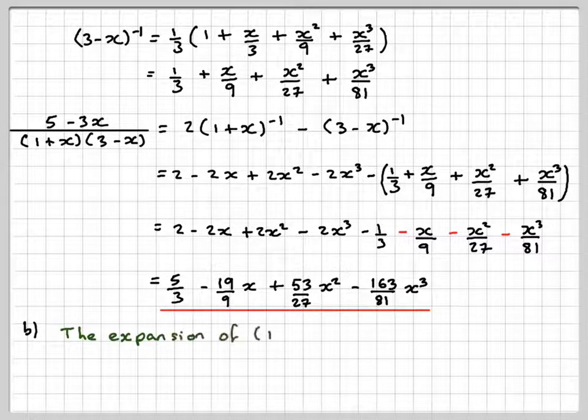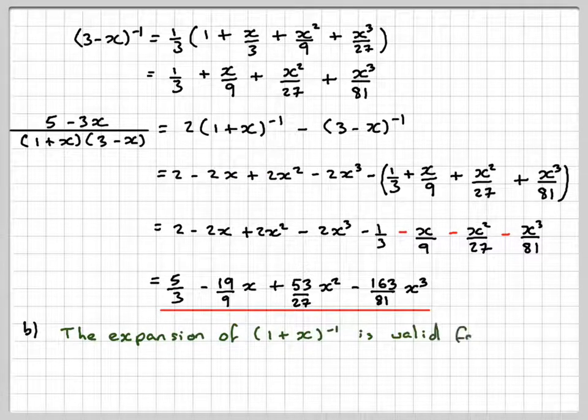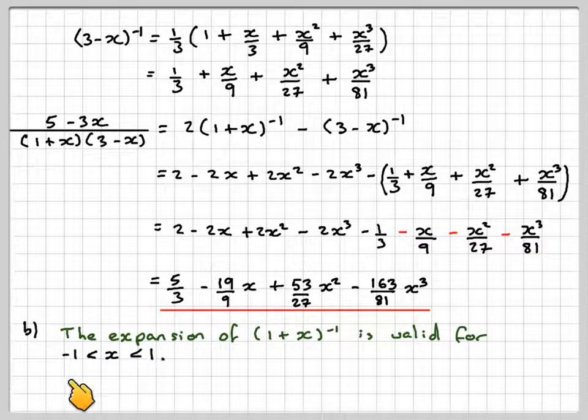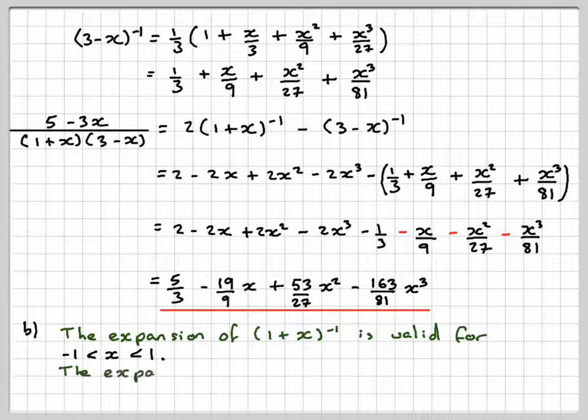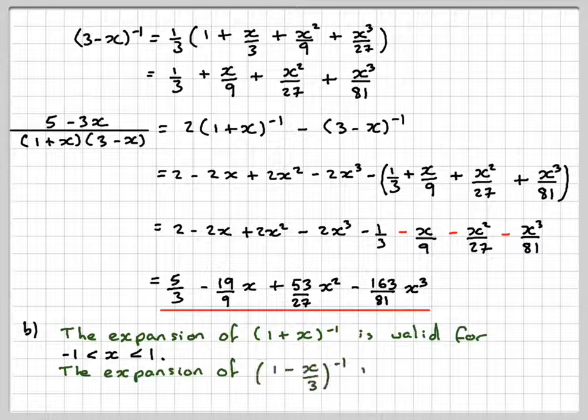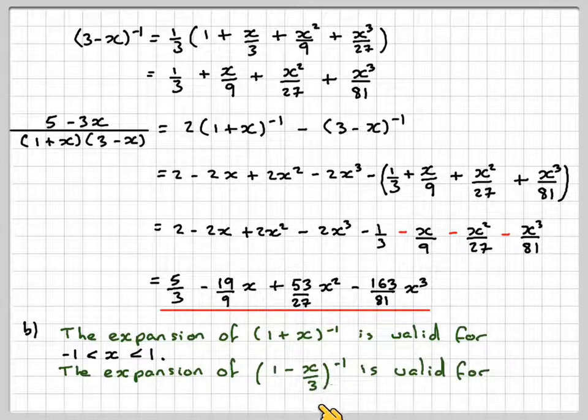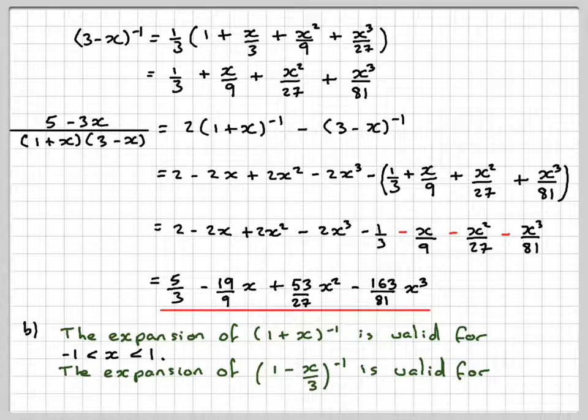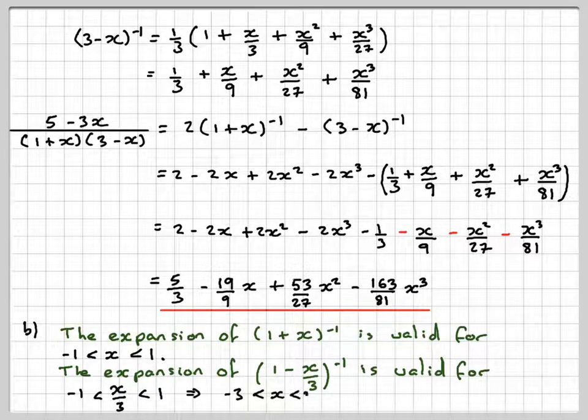Well, this expansion here is valid for x being between minus 1 and 1. And this expansion here, when we think of it like this, 1 minus x over 3 to the minus 1 is valid for x over 3 being between minus 1 and 1, therefore x being between minus 3 and 3. So if we put those both as an inequality on the same number line.